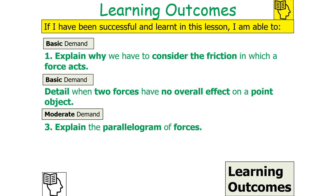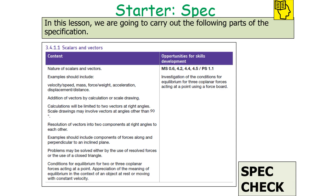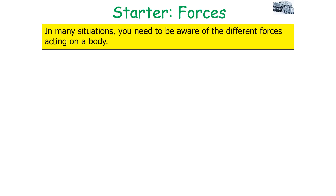We'll cover when two forces have no overall effect on a point object, and explain the parallelogram of forces. In today's lesson we're going to be looking at AQA A-level physics specification 3.4.1.1: scalars and vectors.